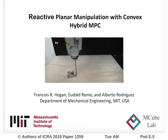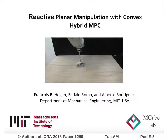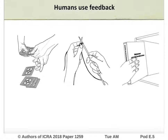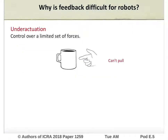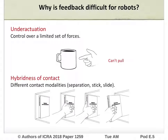This paper presents a reactive controller design for hybrid and underactuated dynamical systems. Humans manipulate objects within their hands with ease, and one of the key reasons that enables us to do this so well is our ability to sense the world and react to what we detect. Humans naturally understand how to apply feedback through contact interactions. This reactiveness is challenging for robotic systems, as classical model-based approaches struggle to deal with underactuation, where physical interactions limit the set of possible forces, and a hybridness of contact due to different contact modalities.